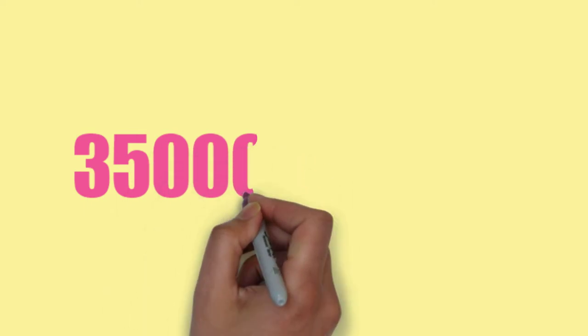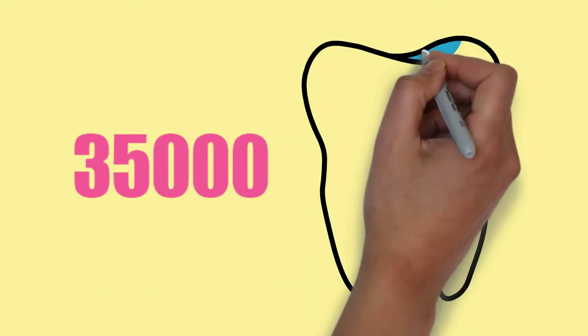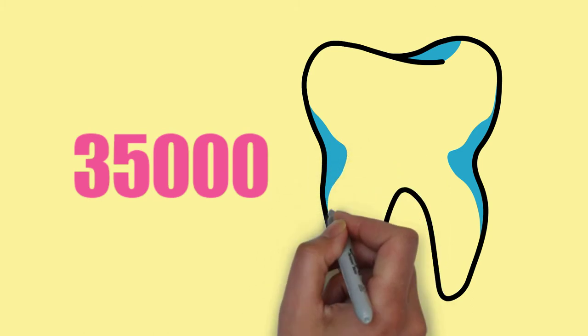Some species of shark can shed over 35,000 teeth in a lifetime. As soon as one falls out, a new one will grow out.